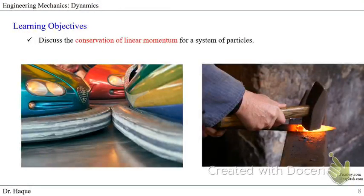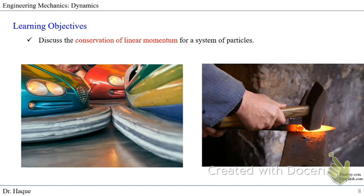Our objective is to discuss the conservation of linear momentum for a system of particles. Examples include the football players, bumper cars free to move on the floor, and a hammer striking a rod for a short period of time. In all these cases, if there is no additional impulsive force before and after the collision, we can apply this concept.